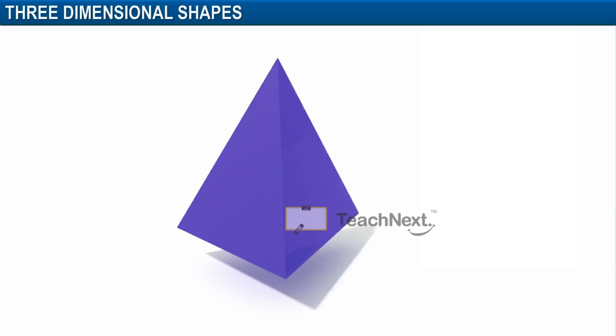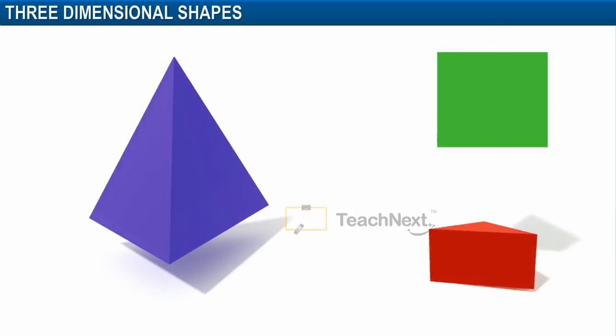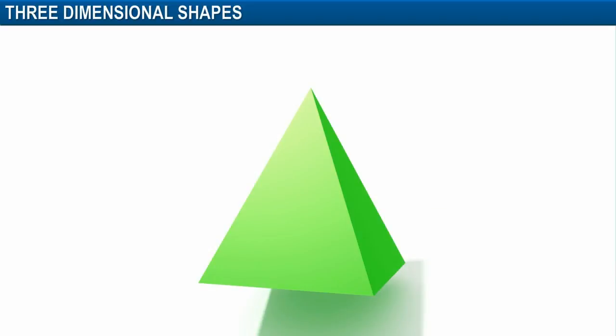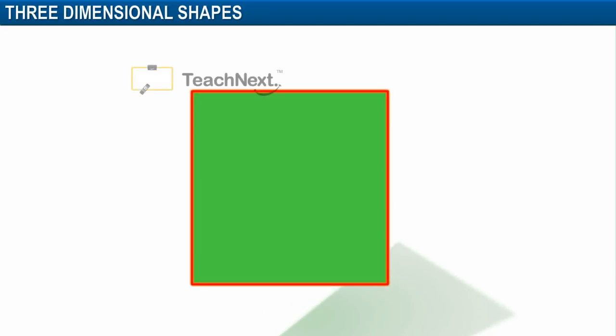Each pyramid is named after the shape of its base. For example, a pyramid with a square base is called a square pyramid.